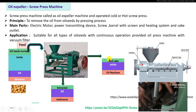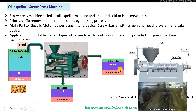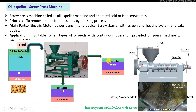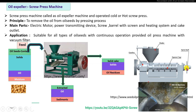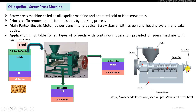The remaining solid materials containing a small amount of oil exit through the outlet section. There is a provision to adjust the internal pressure as per requirement to maintain specific pressure in order to achieve maximum extraction of oil from the seeds.